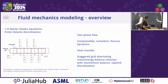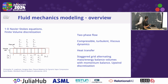This is a quick overview of the fluid mechanics, showing how this generalizes to other similar systems. Behind the scenes, we implement a 1D Navier-Stokes equation with a finite volume discretization — covering mass, energy, and momentum balances. We also have the capability for two-phase flow because evaporation goes from liquid to gas.